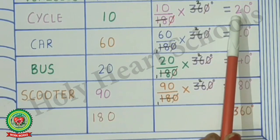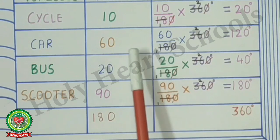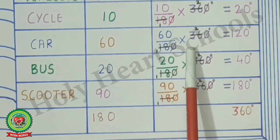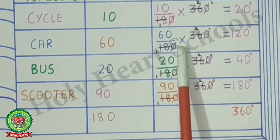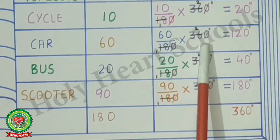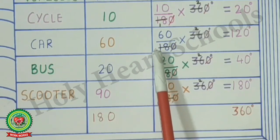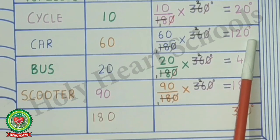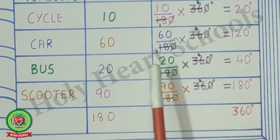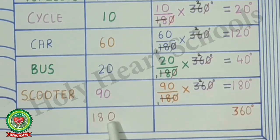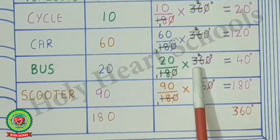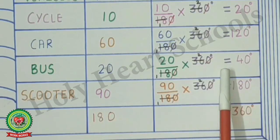The next given value is 60 upon total value 180, multiplied by 360 degrees. After cancellation on the 18 times table, multiply 60 by 2, giving 120 degrees. Similarly, the third given value is 20 upon 180, multiplied by 360 degrees. After cancellation, multiply 20 by 2, giving 40 degrees.